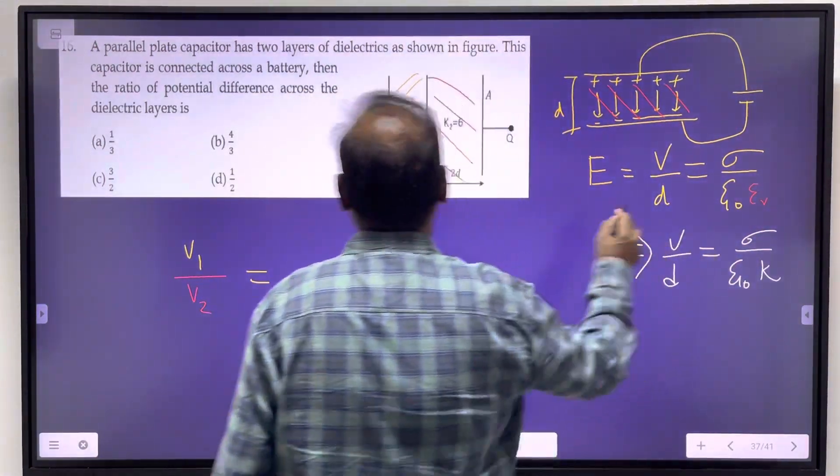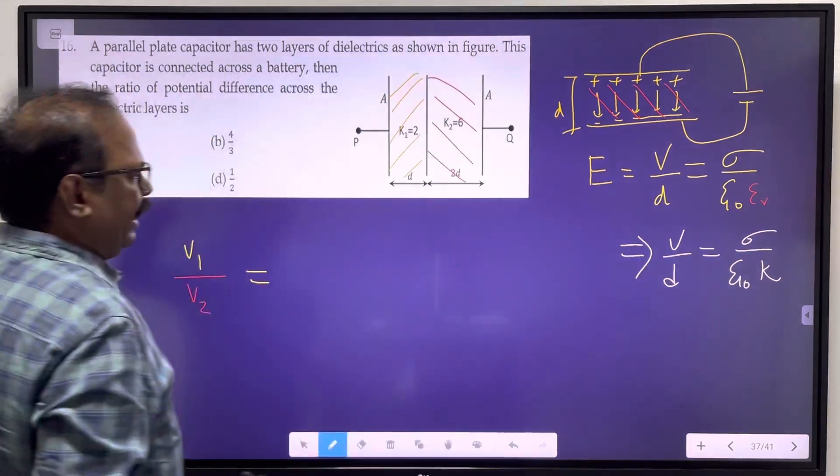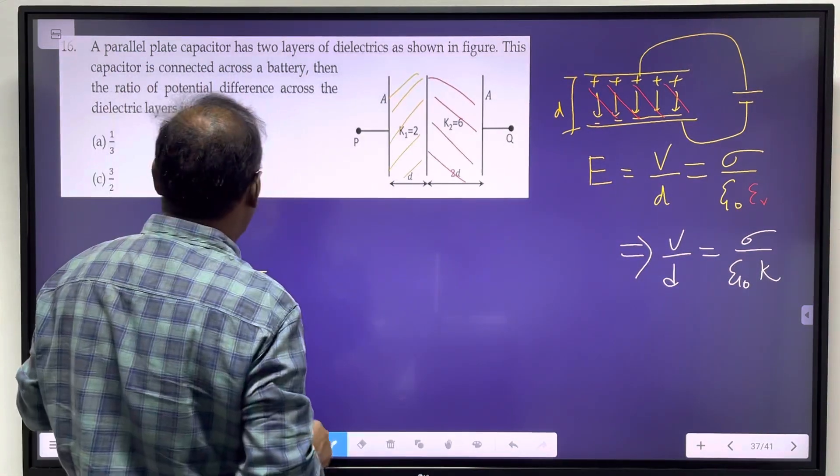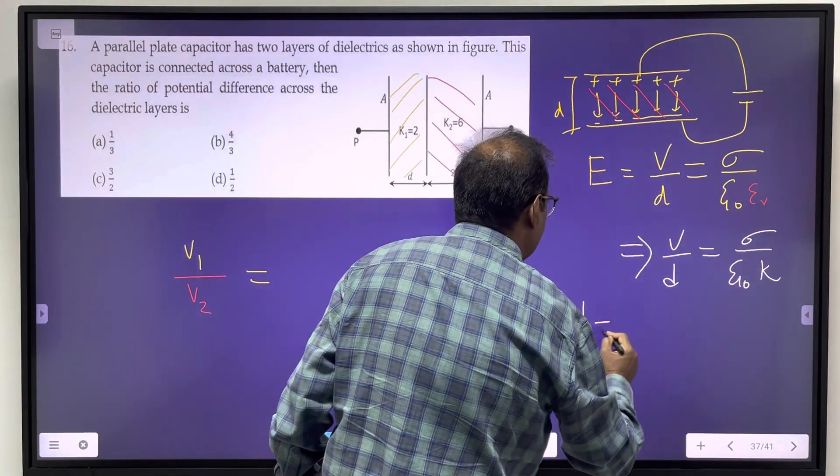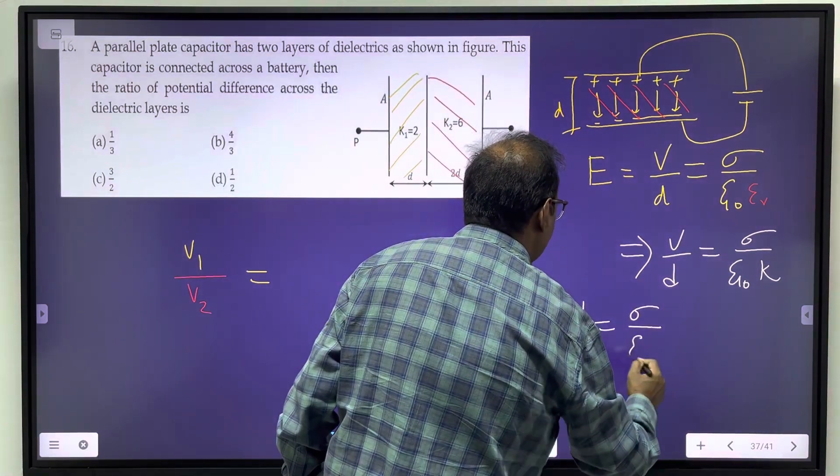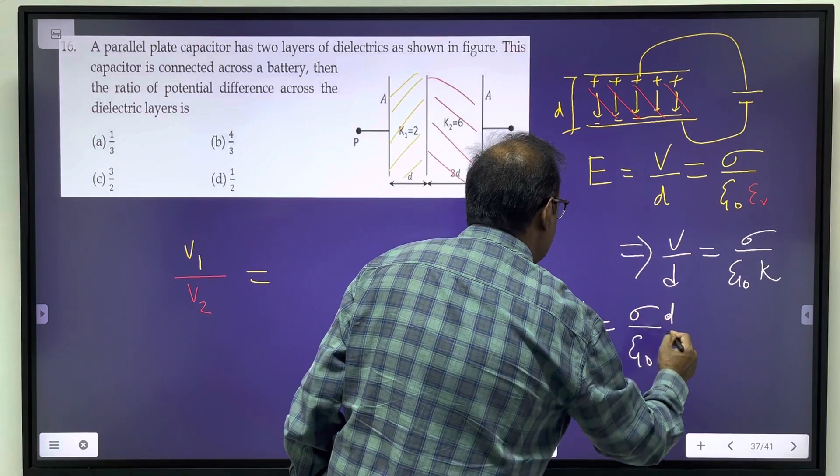This concept is required here. For V1 by V2, V equals sigma by epsilon naught times D by K. I am going to make use of this formula.